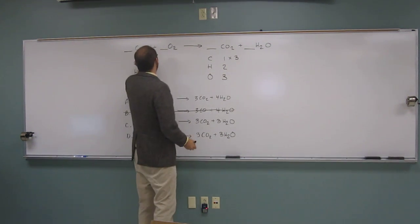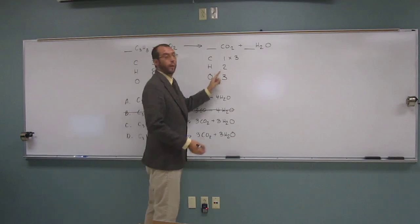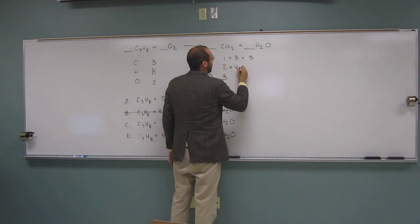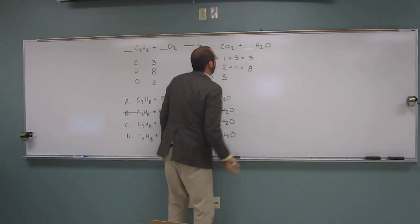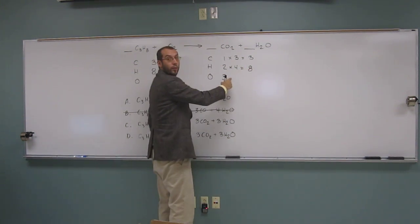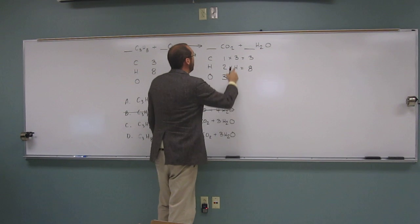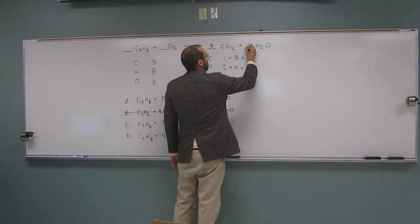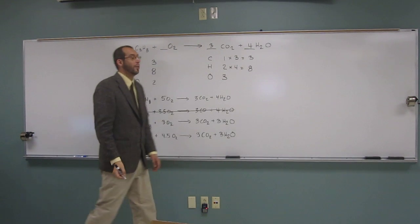So if we have eight here, we've got two here. So we're going to multiply that by four, right? So that's going to give us three. That's going to give us eight, like that. And then we've got a question mark there. So three there, four there.